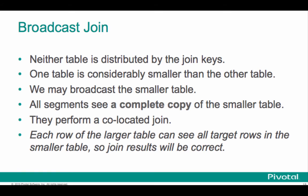In a broadcast join, neither of the tables is distributed by the join keys. One of the tables is going to be considerably smaller than the other table. If this is the case, we can broadcast the smaller table. If we do that, all the segments are going to have a complete copy of the smaller table, and then we can perform a co-located join independently on each one of the segments. Each row of the larger table can see all the target rows in the smaller table, and so those join results will be correct.